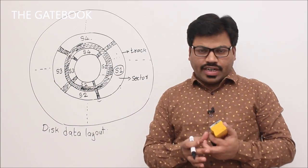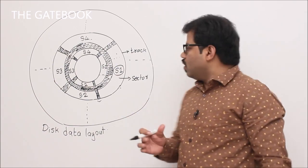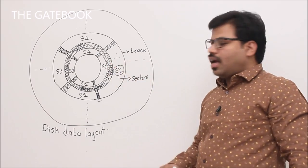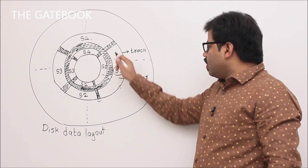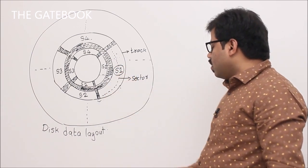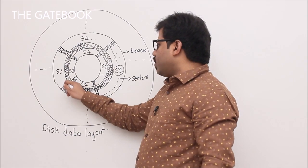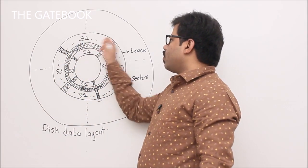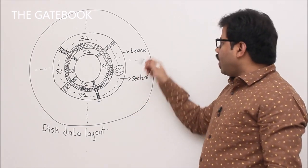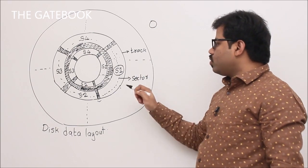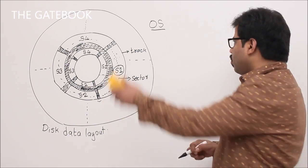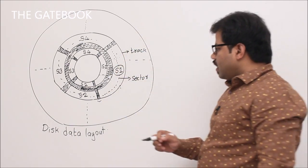Now let's focus on how much data we store and how we store it. We select a track, and in that track we write data in sector 1, then sector 2, sector 3, sector 4 — that is the usual way. Where to write data and which addresses to use is decided by the operating system.